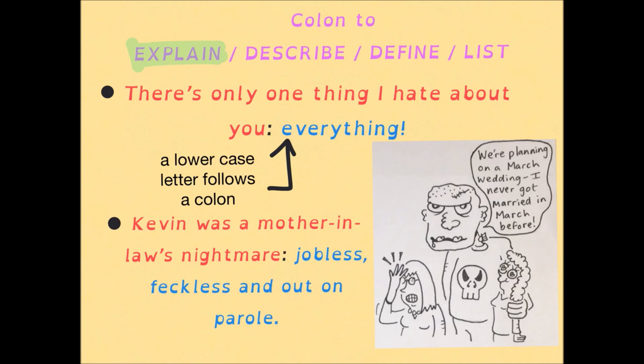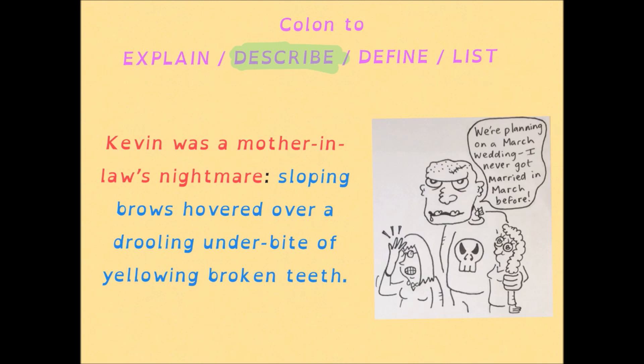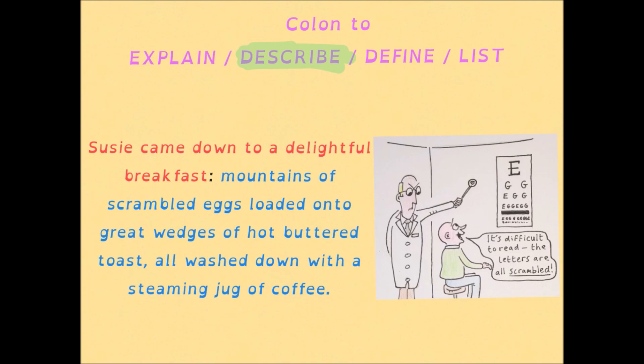We're going to stick with Kevin a bit longer, because that dead-eyed Neanderthal helps us demonstrate how colons can be used to launch a description. This example looks like an explanation, but by describing Kevin's unappealing appearance we're explaining why he's such a nightmare for a mother-in-law. Let's have a quick read: 'Kevin was a mother-in-law's nightmare: sloping brows hovered over a drooling underbite of yellowing broken teeth.'